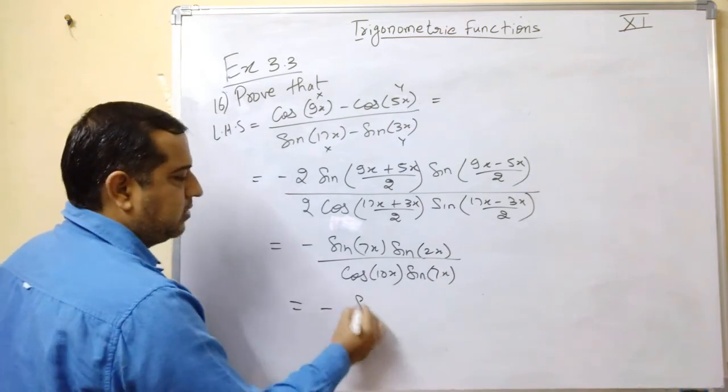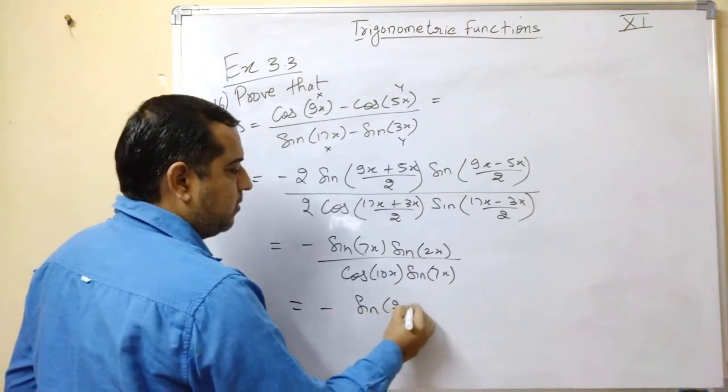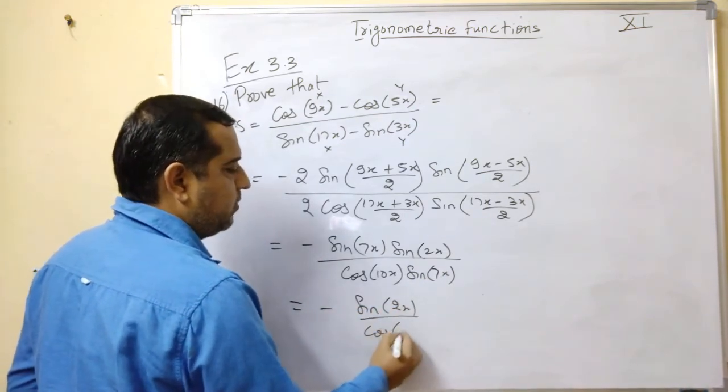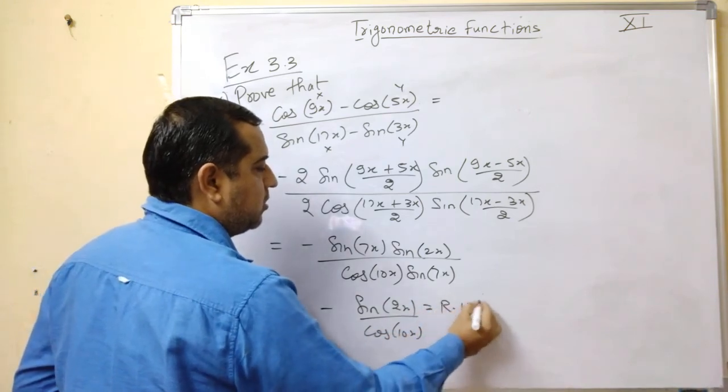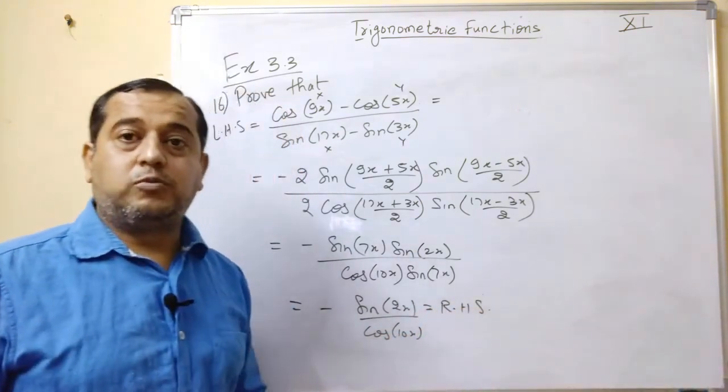This 7x and 7x get cancelled. So you get answer minus sin of 2x upon cos of 10x. This was to be proved.